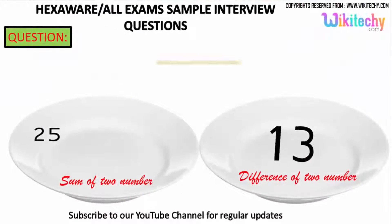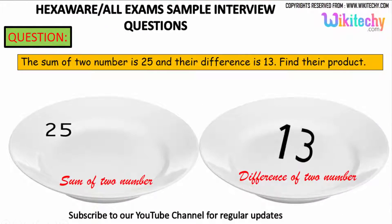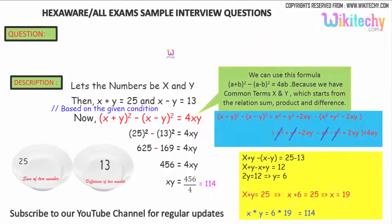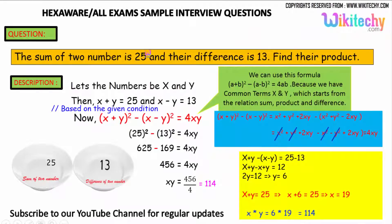The sum of two numbers is 25 and the difference is 13. Find their product. That's the question. So I'm considering the numbers to be x and y.